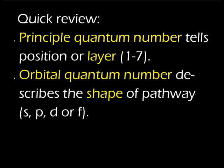We're halfway through our discussion of how electrons are arranged in each atom and how those arrangements determine reactivity. Let's review: the principal quantum number tells the position or distance an orbit or energy level is from the nucleus — a whole number from one through seven, one being closest and seven being farthest. The orbital quantum number indicates the shape of the orbit: s for spherical, p for pear-shaped, d possibly dumbbell, and f.